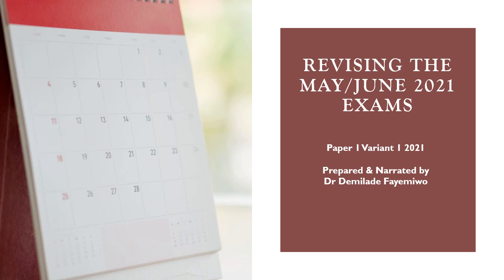The exception is paper three. I can't do paper three exams because they are practical, so you have to work with your teacher or attach yourself to a school and get practice on lab experiments. I don't work in a school at the moment, so I can't help with that. I will revise the May June 2021 papers one to four, and I will only be doing variant one of each paper.